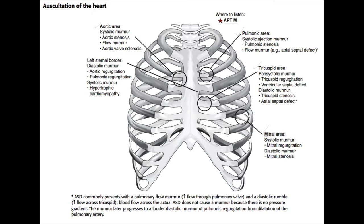Left to right shunting means that blood from the left atrium goes to the right atrium, and therefore you see a greater amount of flow through the pulmonic valve than you normally would, because all of that blood going into the right atrium has to go to the right ventricle and then through the pulmonic valve into the pulmonary artery. The blood flow across the atrial septal defect from left to right generally does not cause an audible murmur because the pressures are so low and the pressure gradient is so small. But what you will hear in a patient with an atrial septal defect is a flow murmur in the pulmonic area.